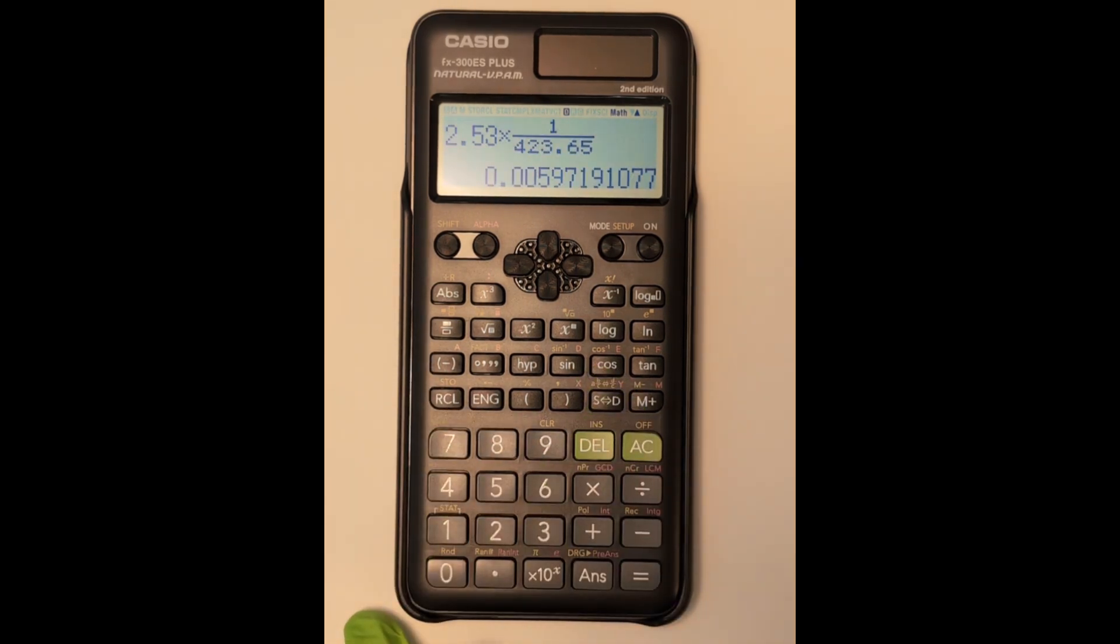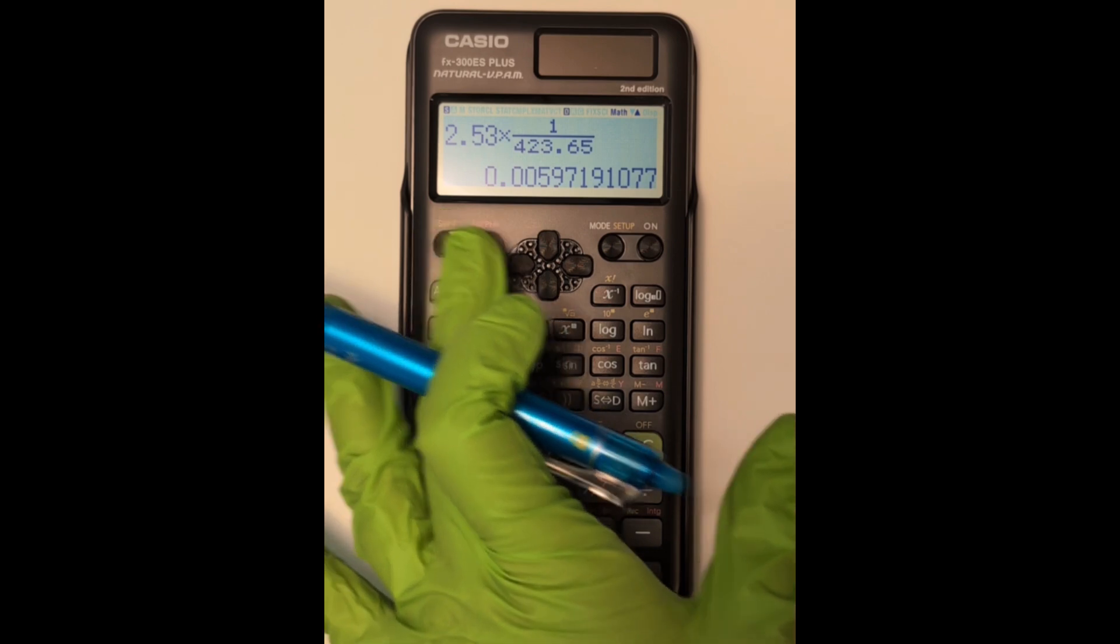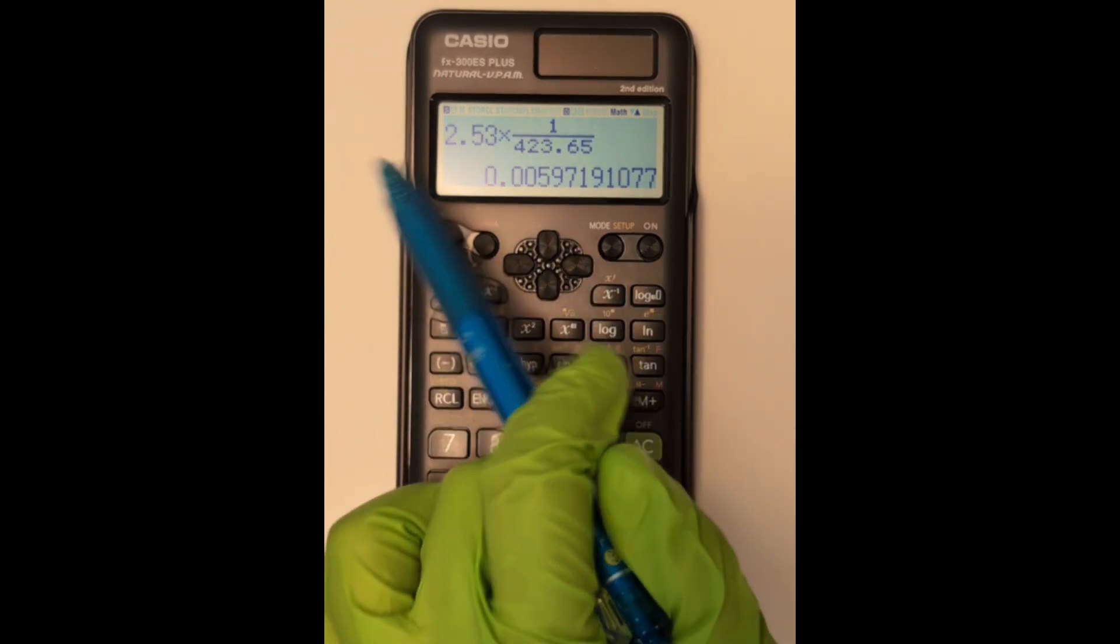Again, we're going to want the answer in decimal form, so hit that SD button. But you'll want to record your answer to the correct amount of significant figures. So you're going to need to put your calculator into the scientific figure mode again.